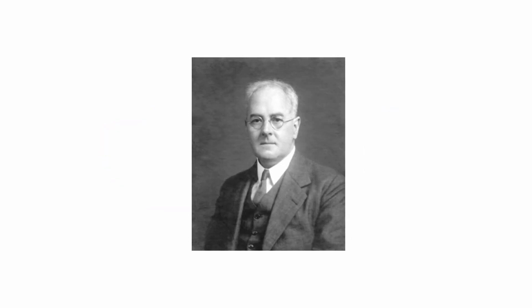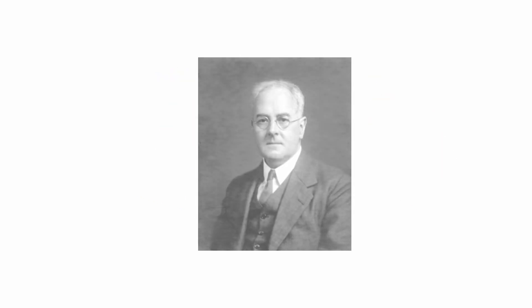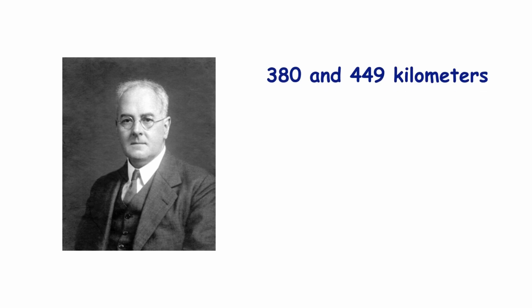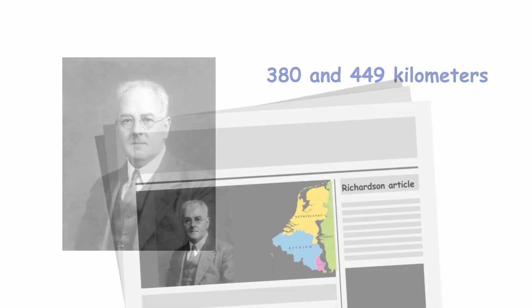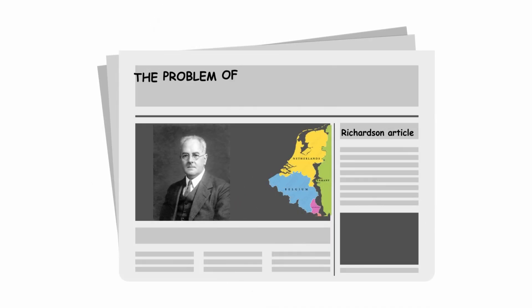It might just be curiosity, but when he looked up the length of the border between the Netherlands and Belgium, he also found two different values, 380 and 449 kilometers. Richardson published this finding in his article entitled, The Problem of Contiguity, An Appendix to Statistics of Deadly Quarrels.